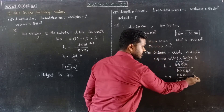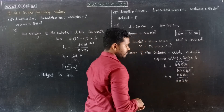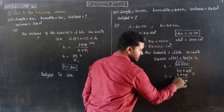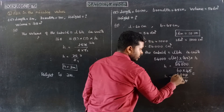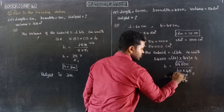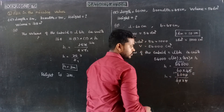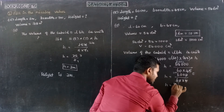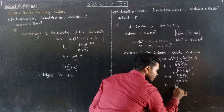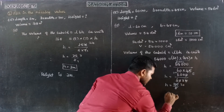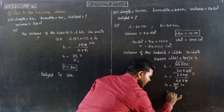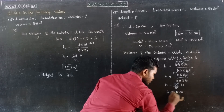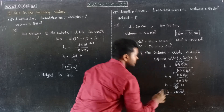So 6,000 divided by 60 into 5 — cancel the zeros: 600 divided by 6 into 5 equals 100 divided by 5, which equals 20. Therefore, height is equal to 20 centimeters.